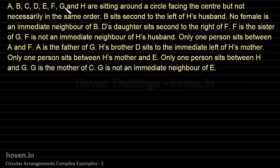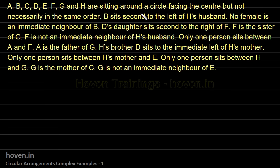A, B, C, D, E, F, G, and H are sitting around a circle facing the center, but not necessarily in the same order. This problem involves blood relations. B sits second to the left of H's husband. No female is an immediate neighbor of B. D's daughter sits second to the right of F. F is the sister of G. F is not an immediate neighbor of H's husband. Instead of drawing the table first, we should extract the family chart — once we have the family chart, we can get good hints for the seating arrangement.